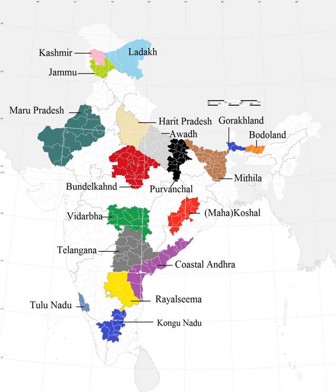The creation of new states and territories in India is a power reserved solely for the Parliament of India. Parliament can do so by announcing new states, separating territory from an existing state, or by merging two or more states or parts thereof. In addition to the existing 29 states and seven union territories, some new states and territories of India have been proposed to be established over time.